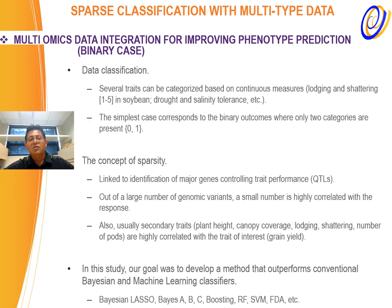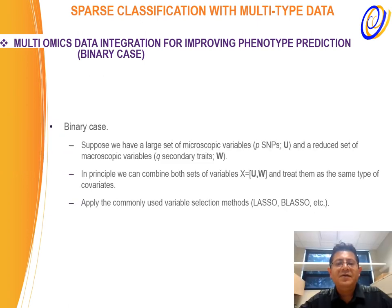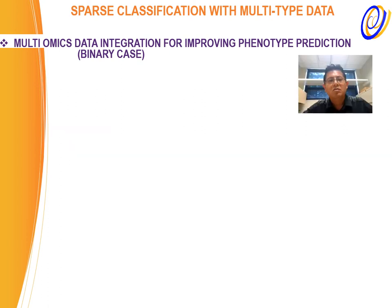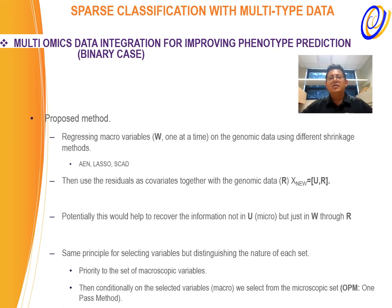Our goal was to develop a method that outperforms conventional classifiers based on machine learning. When we have different data types, one naive approach is to consider both datasets and treat them as the same nature, applying conventional variable selection methods for classification. In our case, we developed a method that treats the different data types differently. For example, we give priority to macroscopic variables or secondary traits because we know they might bring more information, and then we start selecting from the set of microscopic variables or molecular markers to avoid losing important information from the secondary traits.